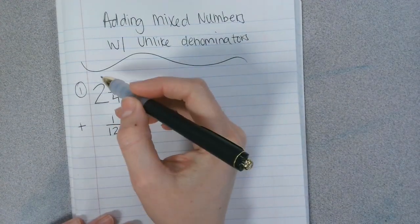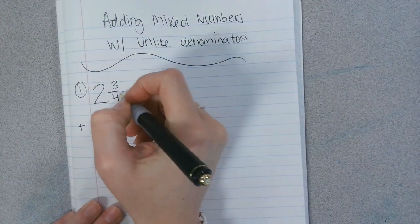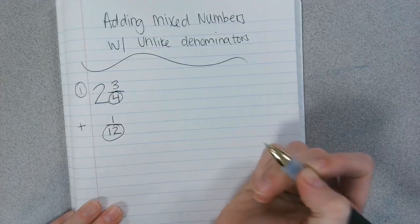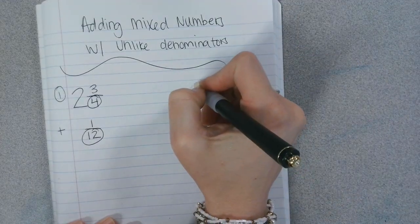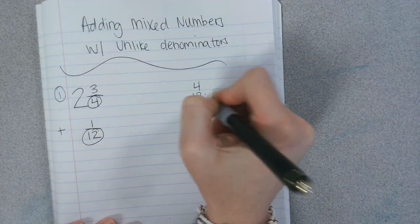Alright, so here we have 2 and 3 fourths plus 1 twelfth. We notice that the denominators are not the same.